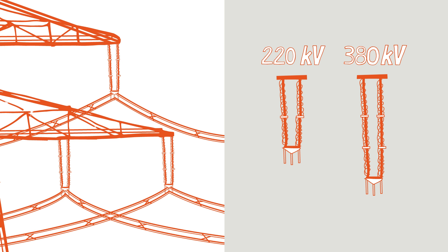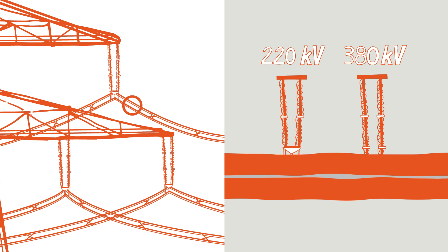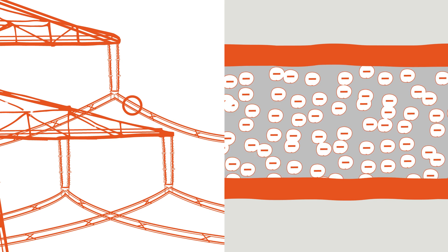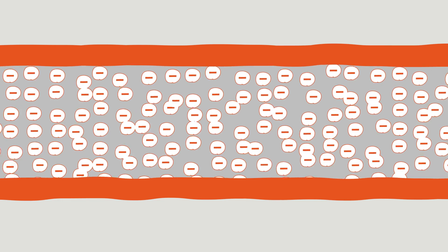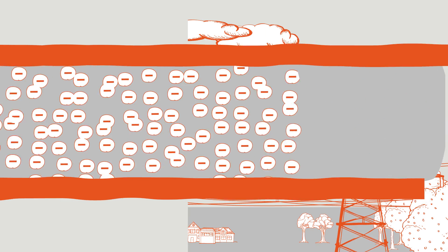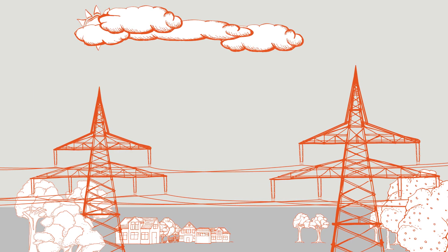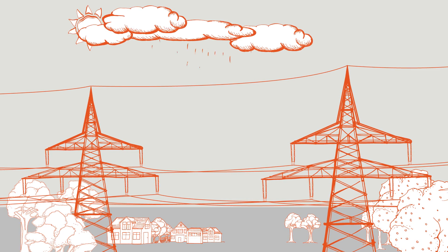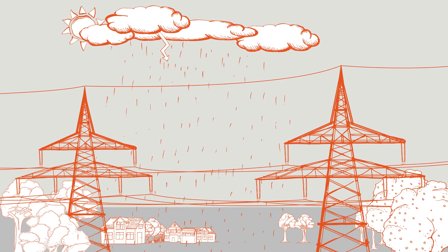The electricity is transported through conductors in the form of small electrons with a negative charge. The live conductors are made of aluminum steel, a conductive material. Earth wires are attached to the top of the pylons. They do not transport electricity but protect the live conductors against lightning strikes.